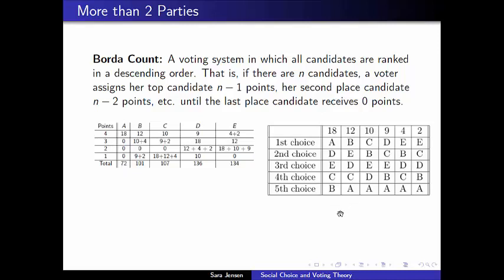For the other candidates, let's take a look at candidate C as one more example. Candidate C has 10 first place votes, so candidate C should get a total of 40 points for that — 10 times a first place choice receiving 4 points each. But then candidate C is the second choice of two different voter profiles: nine of these voter profiles and two of these voter profiles. So candidate C receives 9 plus 2, or 11 second place votes, and therefore gets 3 points apiece from those, for a total of 33 more points. Candidate C doesn't happen to be anybody's third place choice, so candidate C won't be receiving any points worth 2 points apiece.